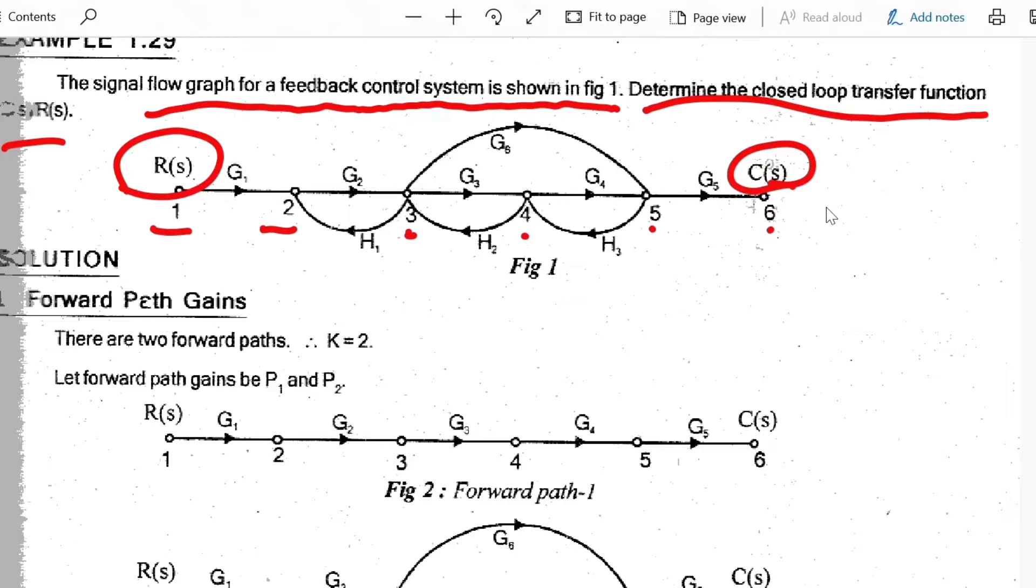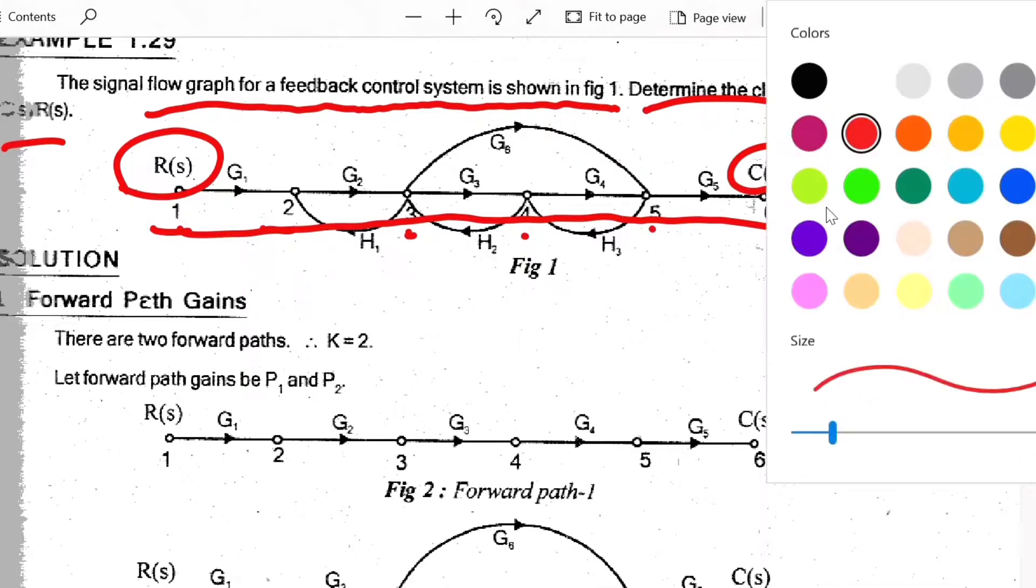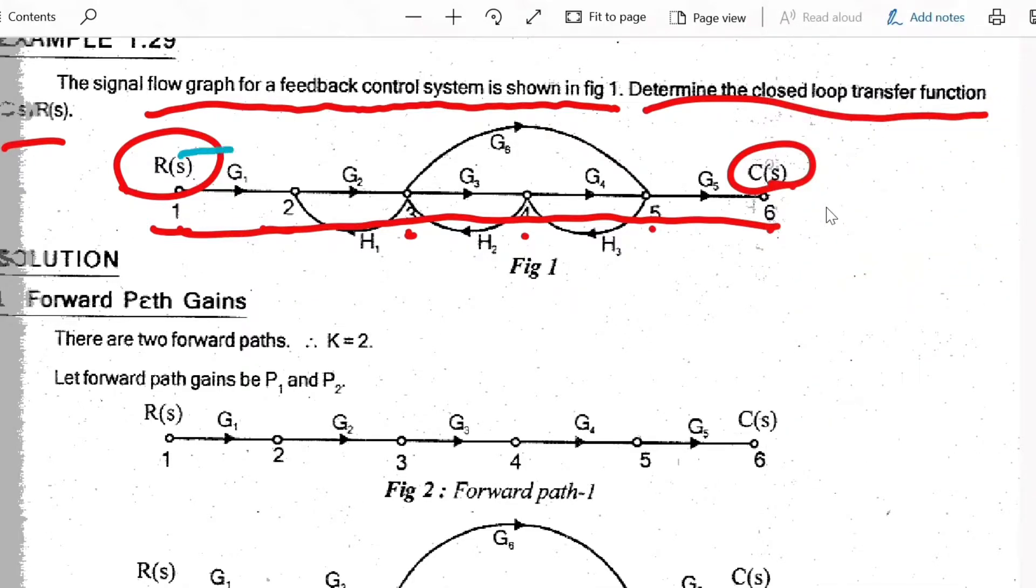Then observe forward path numbers. Forward paths start from input node to output node and cross each node only once. In that aspect we have two forward paths: starting from node 1, 2, 3, 4, 5, 6, and the next forward path from node 1, 2, 3, then skip 4, and 5, 6. So in this problem, first step K equals 2.